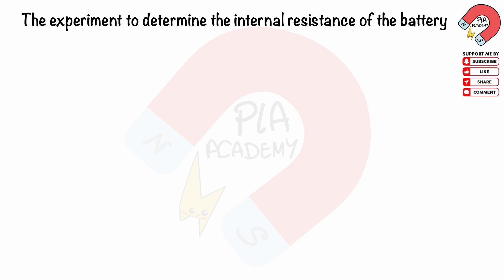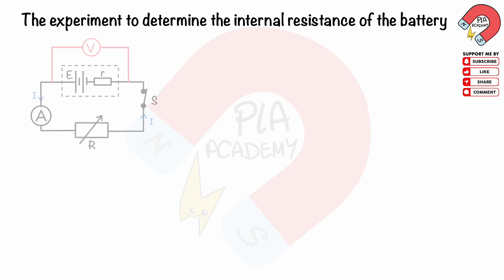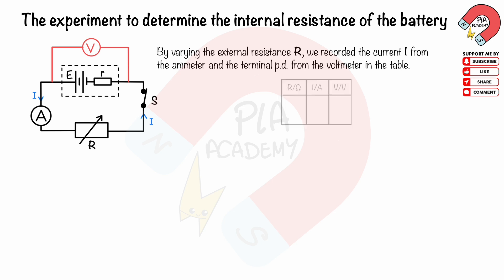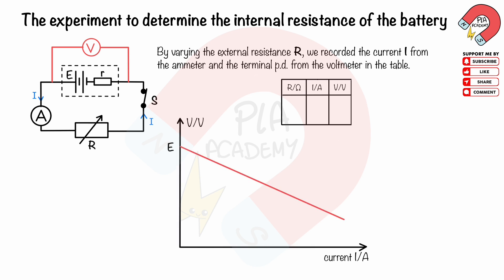The experiment to determine the internal resistance of the battery. We set up the circuit as shown in the diagram. By varying the external resistance R, we record the current I from the ammeter and the terminal PD from the voltmeter in the table. We then plot the graph of PD V against current I, as shown. The graph is a straight line with a negative gradient.